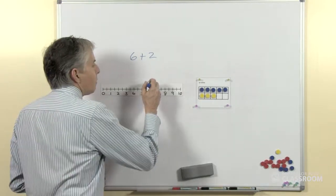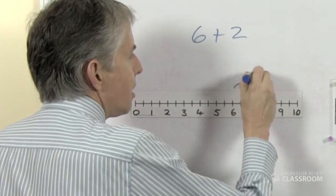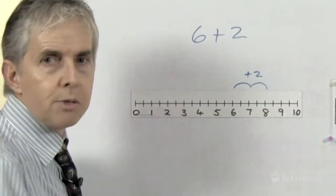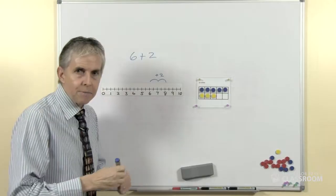But obviously at the learning phase, the students can see that there are 2 jumps. If we're starting from the 6, we're moving on 2, then we get to 8 and so on.